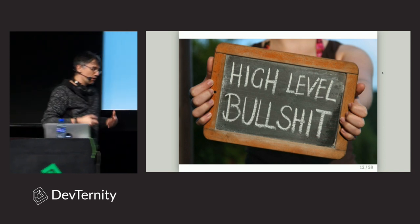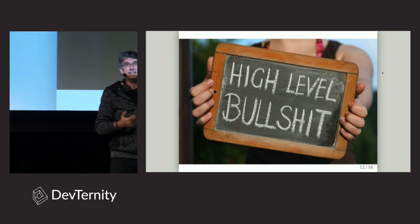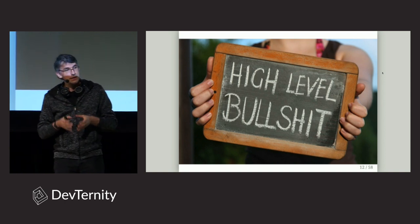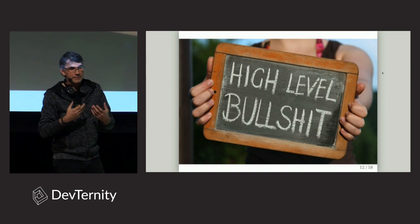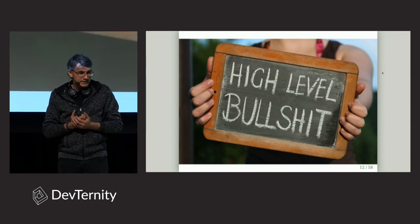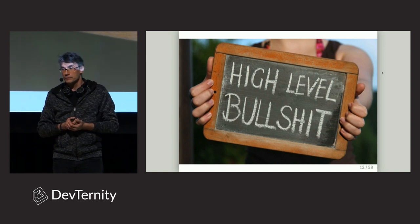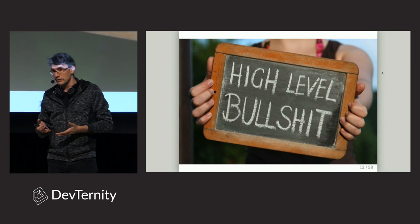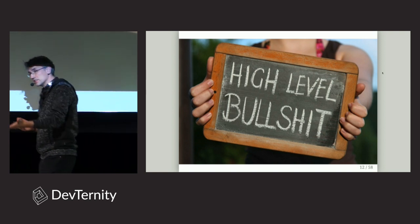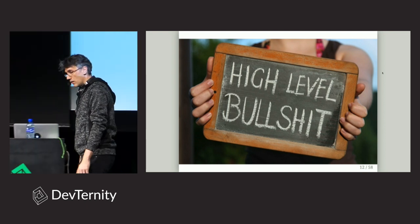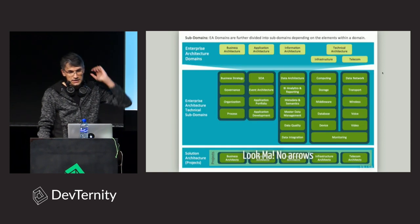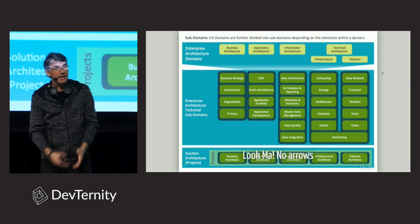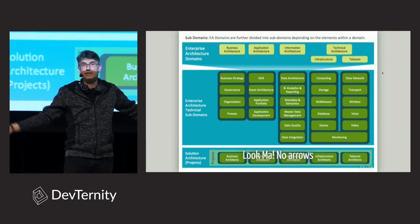What happens next is the enterprise architect is asked to draw architecture diagrams. Enterprise architects are often very good and necessary people, but they shouldn't be taking care of software architecture. The enterprise architect's role is about the organizational part — processes, teams, how to organize IT. When they try to design software architecture, you get a diagram with no arrows. What are the messages? What are the APIs? What do those boxes even do? You have no idea.